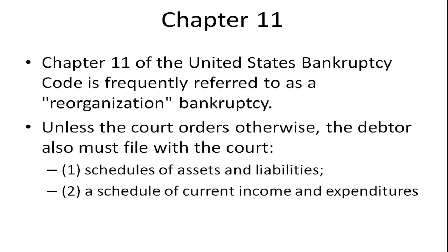Another popular one is Chapter 11. Chapter 11 of the United States Bankruptcy Code is frequently referred to as a reorganization bankruptcy. Unless the court orders otherwise, the debtor must file with the court schedules of assets and liabilities, a schedule of current income and expenditures. There's going to be some sort of reorganization — sometimes bondholders' claims get converted to stock. Some of the creditors are going to lose out based on what state and federal laws require, but there are certain rules governing this reorganization.